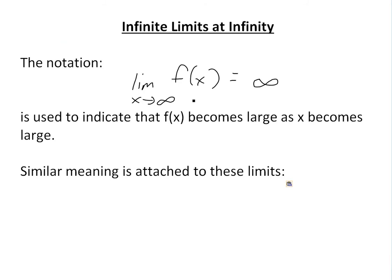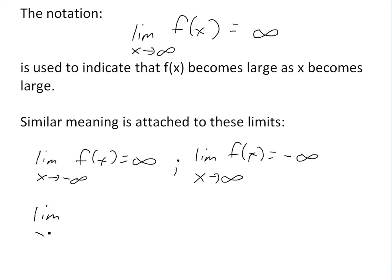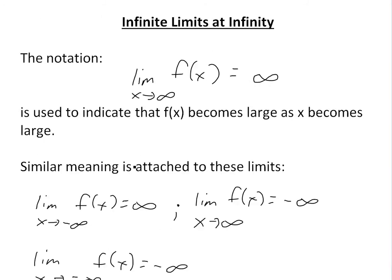Similar meanings are attached to related limits. For example, limit as x approaches negative infinity of f of x, if this equals infinity, this is an infinite limit at negative infinity. Similarly, if you have limit as x approaches infinity of f of x equals negative infinity, or limit as x approaches negative infinity of f of x equals negative infinity — these all indicate f of x becomes large on either the negative or positive sides.